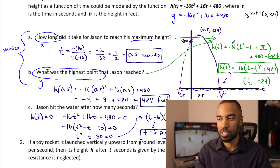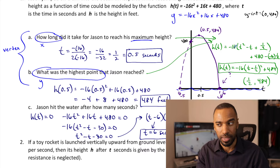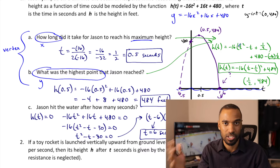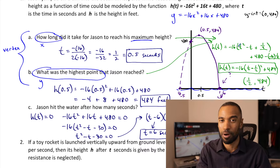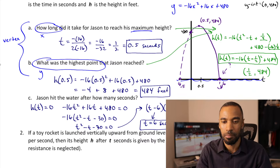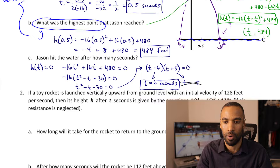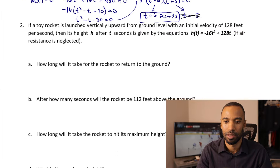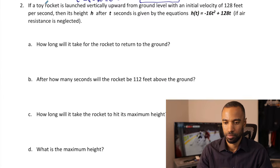That negative 16 — you're going to factor it out each time. Every problem here probably has negative 16 because they all involve gravity.